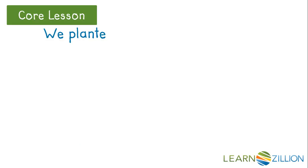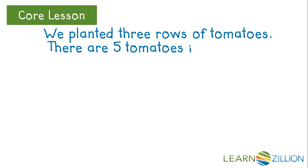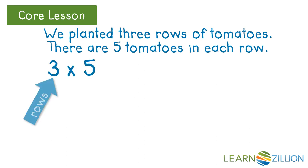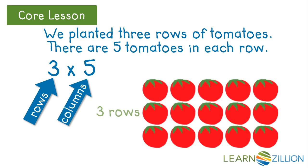Here's a correct story to go with the tomato array. We planted three rows of tomatoes. There are five tomatoes in each row. Three times five. Three rows and five columns. Here's our array with three rows and five columns of tomatoes.